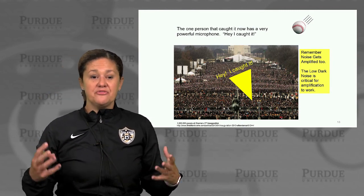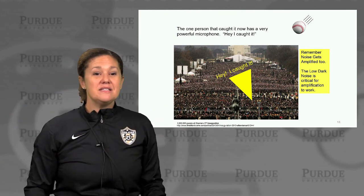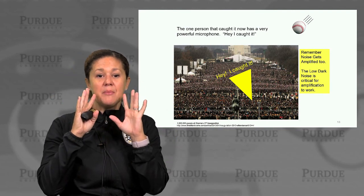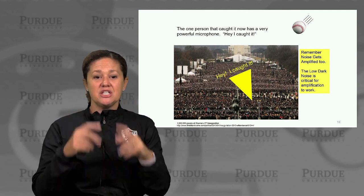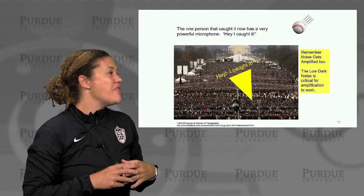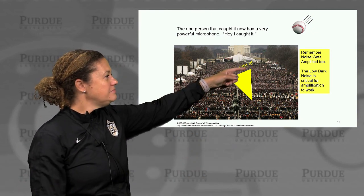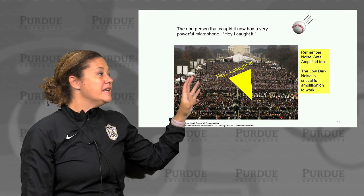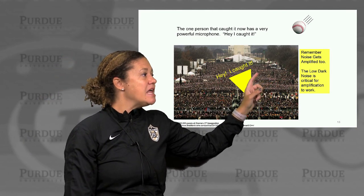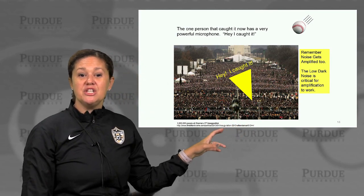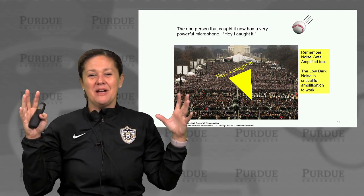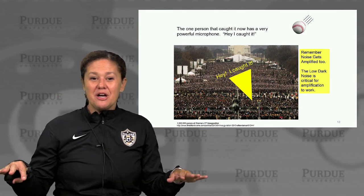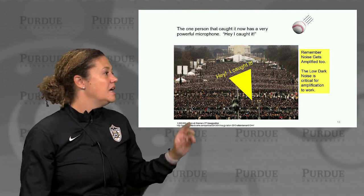Back to our metaphor: one person who caught that ball now has a very powerful microphone that says 'I caught it!' That microphone gives amplification to that person's voice — our signaling cascade gives that amplification to that photon-caught event, so the stage can know someone caught it. But remember, noise gets amplified too. So alone, amplification wouldn't be enough. Back to those earlier design principles: that low dark noise is also very critical for the amplification to work well. If everybody was making noise and everybody had a microphone, the stage wouldn't be able to distinguish it. But with everybody else quiet — very low background noise — our amplification can easily be resolved by the stage, or our brain.